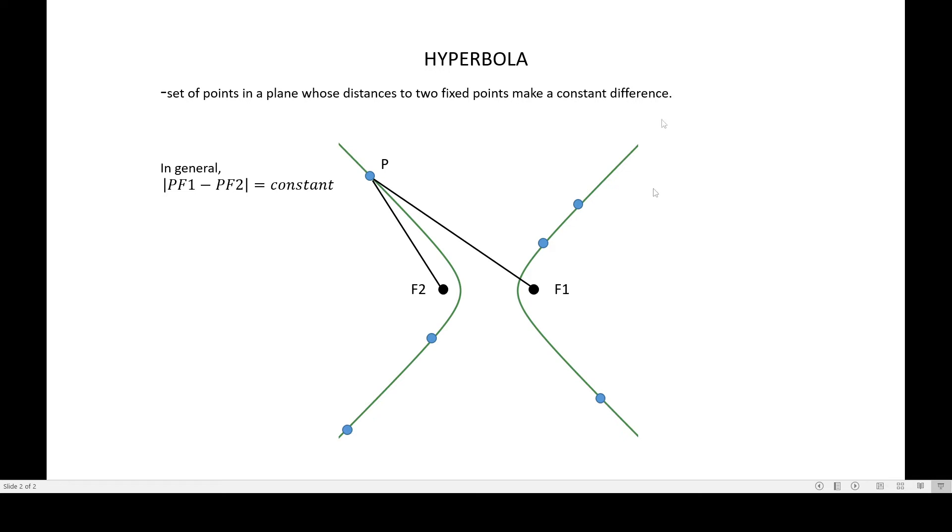PF1 is, of course, the distance P to F1, and PF2 is the distance P to F2. We are trying to subtract them because we are talking about difference.